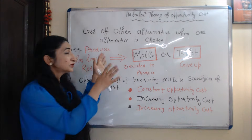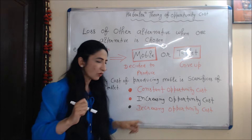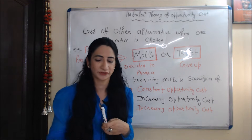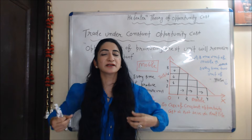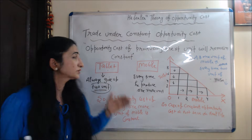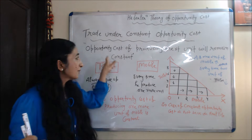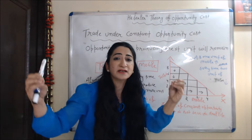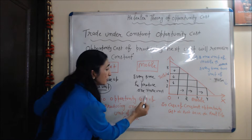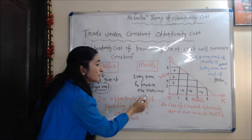In this theory, to explain international trade, Haberler considered three types of opportunity cost: constant opportunity cost, increasing opportunity cost, and decreasing opportunity cost. Now we talk about trade under constant opportunity cost. In case of constant opportunity cost, the opportunity cost of producing the next unit will remain constant. For example, a producer always gives up two units of tablet every time he produces one more unit of mobile.